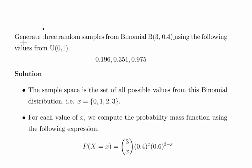In this presentation we're going to look at random number generation. The question is to generate three random samples from a binomial distribution where n equals 3 and the probability of success in any independent trial is 0.4, using the following values from the uniform distribution.